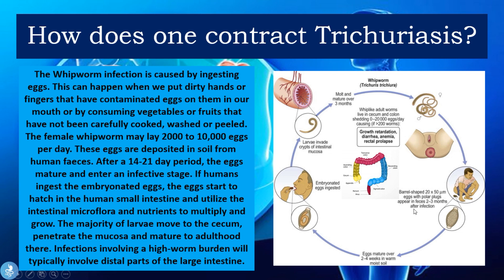From the adult stage, barrel-shaped eggs with polar plugs appear in the feces two to three months after infection. These eggs then contaminate the soil again, and the eggs mature over a period of two to four weeks in warm, moist soil before being ingested again, and the cycle continues. This is basically how the trichuriasis infection spreads.